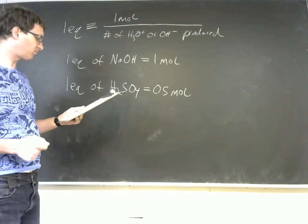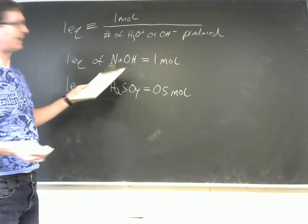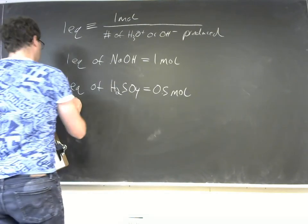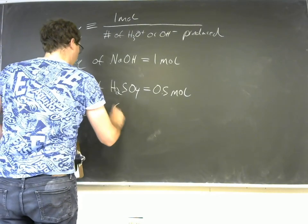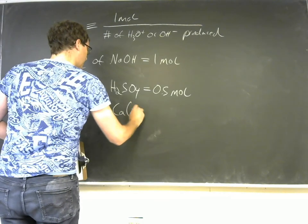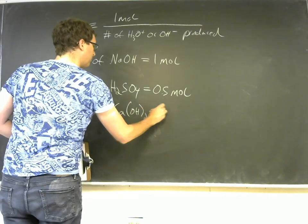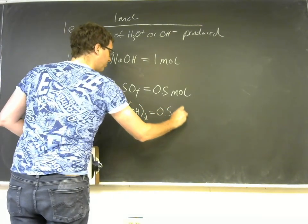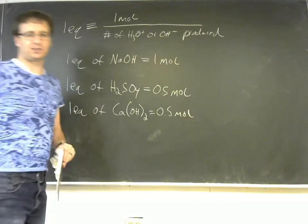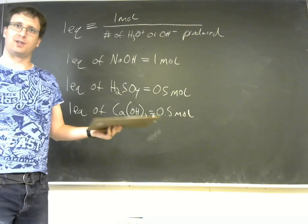Something like calcium hydroxide. So one equivalent of calcium hydroxide would be 0.5 moles of calcium hydroxide. So that's the way equivalents work. I hope that's pretty intuitive.